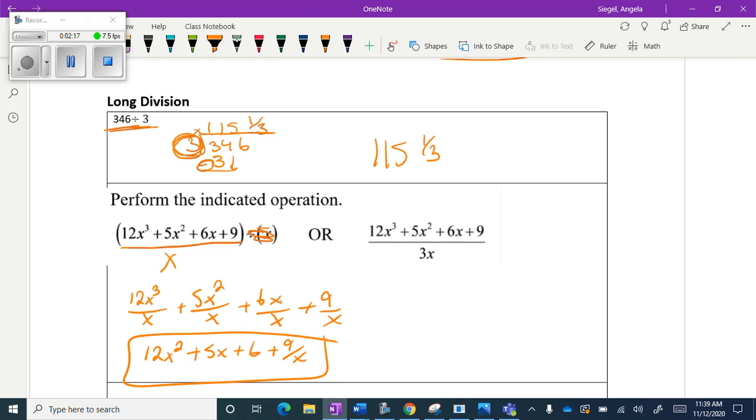Same thing with this over here, same concept. So I'm going to take 3x divided by everything, each term. So that's going to be 4x² and then plus 5x over 3 plus 2 plus 3 over x. So it looks like that.